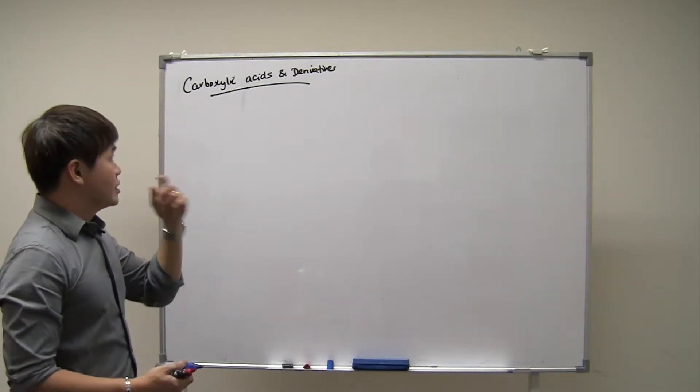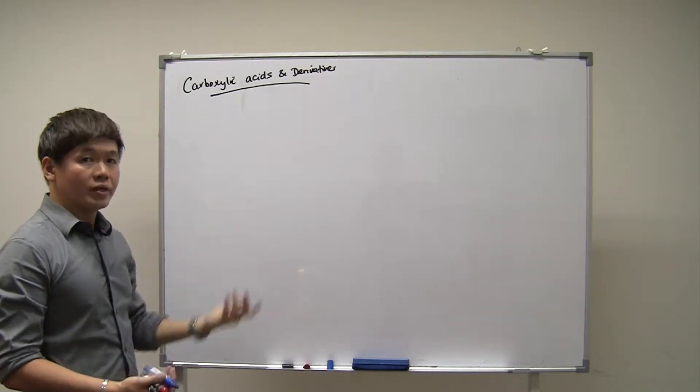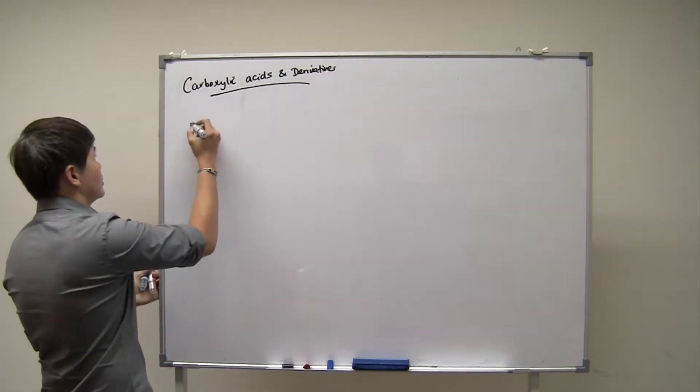Now what are carboxylic acids and derivatives? What are derivatives? Derivatives are compounds that are derived from the acids. So let's take a look at the structures.